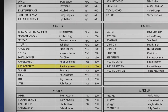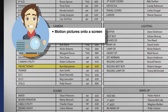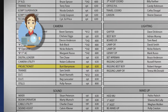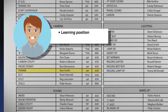A projectionist uses equipment to project motion pictures onto a screen. On set, a projectionist may project images onto a screen as part of a shot or scene, or be in charge of projecting the dailies onto a screen. The camera trainee is a learning position and assists the camera department as required.